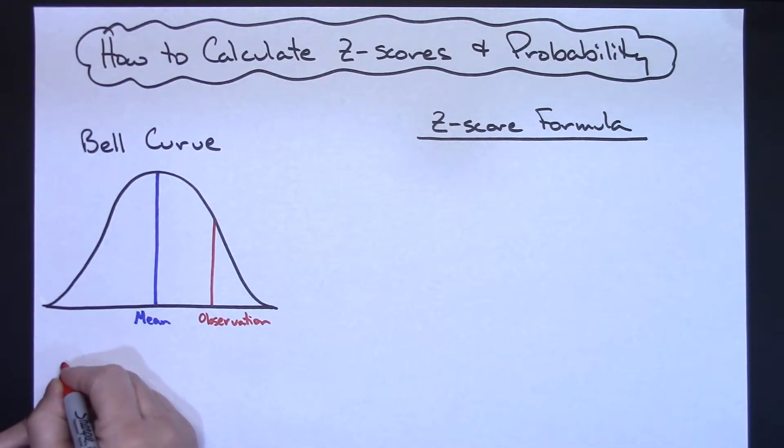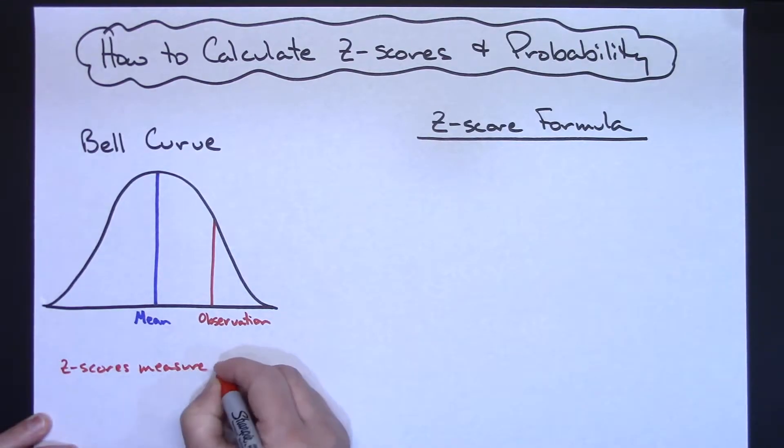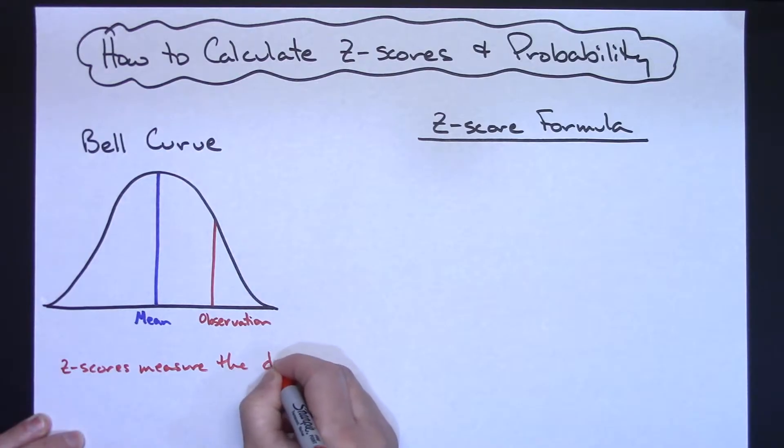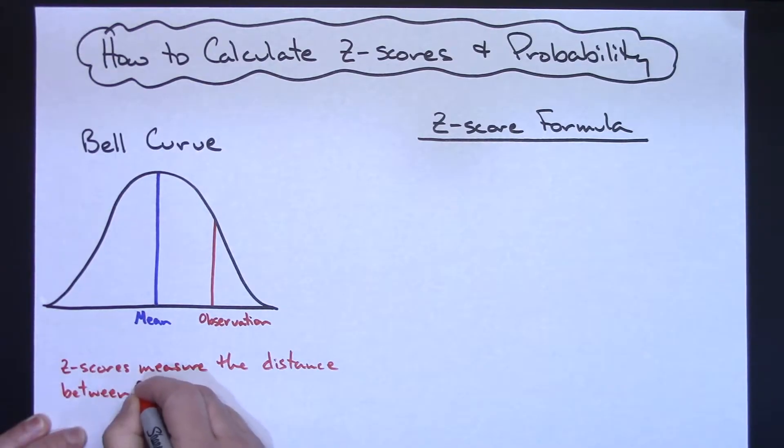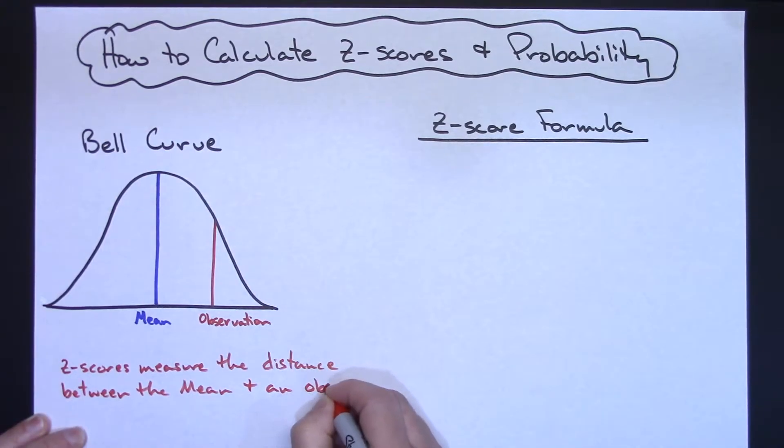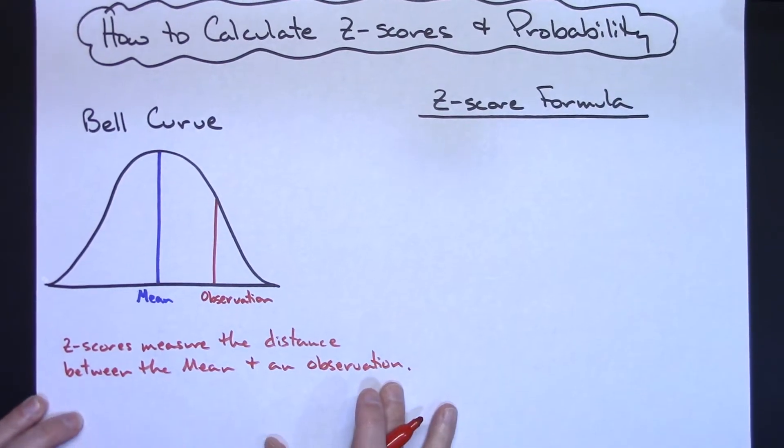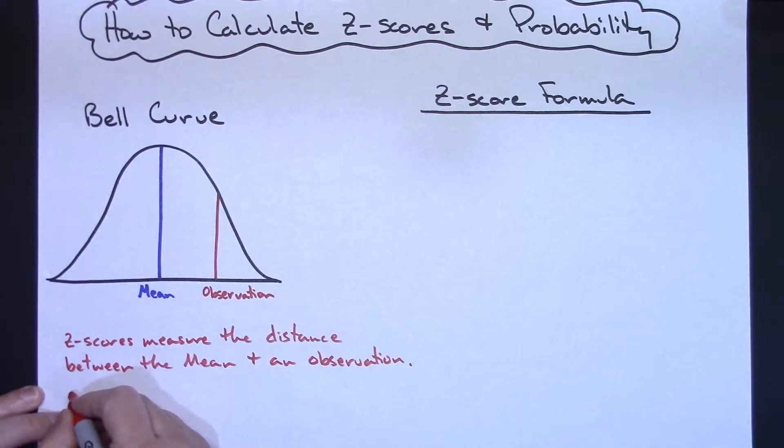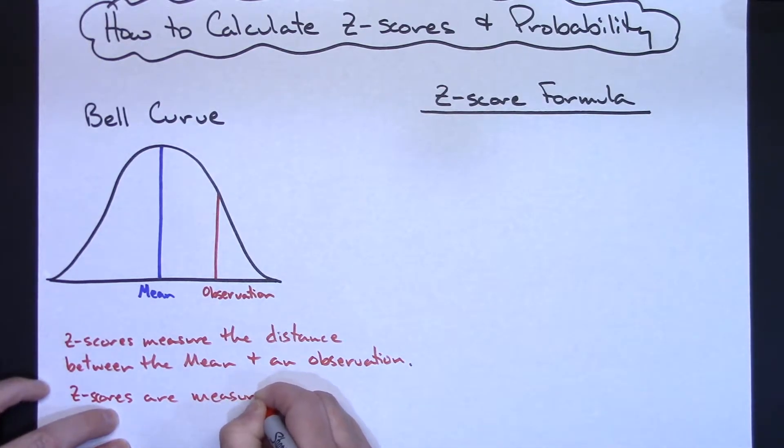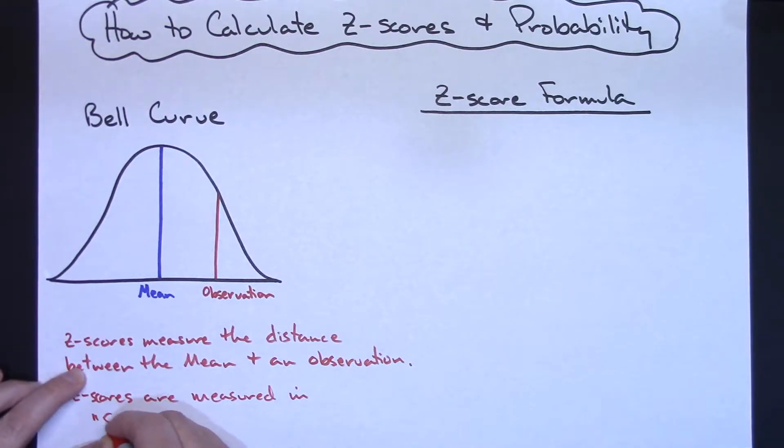So actually, let's write that out here. Z-scores measure the distance between the mean and an observation. And then let's also put on here, z-scores are measured in standard deviations.